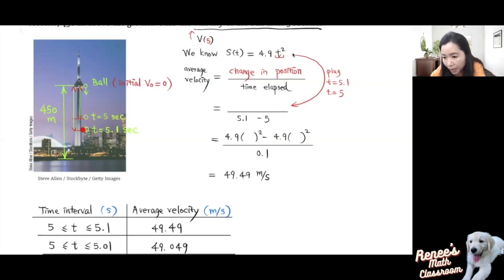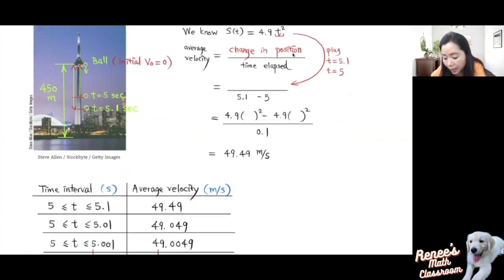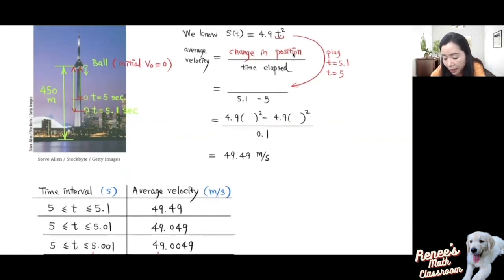Then we can move the ending time closer to 5 — say 5.01 seconds — and calculate the average velocity again. We can even take it closer, to 5.001 seconds. As the time interval gets shorter and shorter, the average velocity gives a better and better approximation to the instantaneous velocity. That's the key idea.